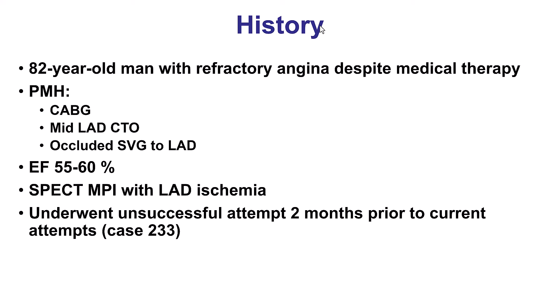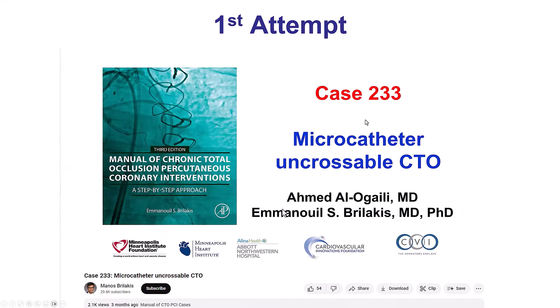The patient was an elderly gentleman with refractory angina and a CTO of the LAD. He had an occluded vein graft to the LAD. We had done a retrograde approach two months prior, but it was unsuccessful. Despite crossing retrogradely, we could not advance the retrograde microcatheter into the antegrade guide catheter. That was Case 233.